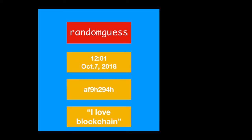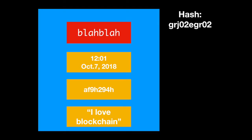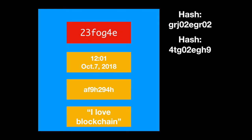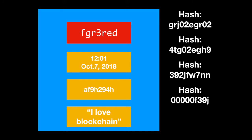We give the nonce a random value at first, and we see the hash code does not start with five zeros. So we change its value and try again — still doesn't start with five zeros. We try again. Nope. We guess again. There we go. Essentially, this is all just using raw computing power to guess the correct value of the nonce so we can have a hash code that starts with five zeros.